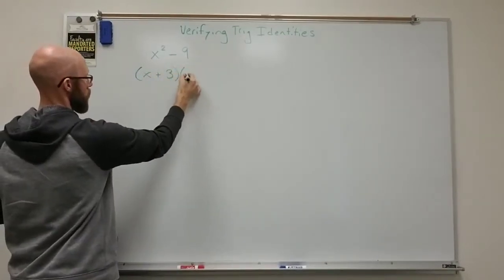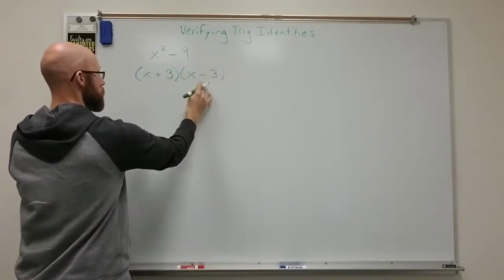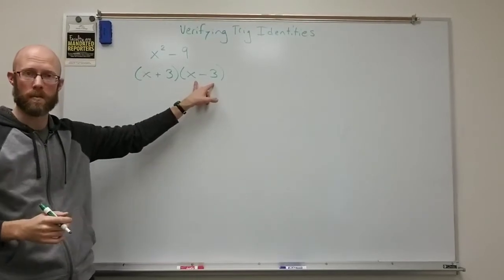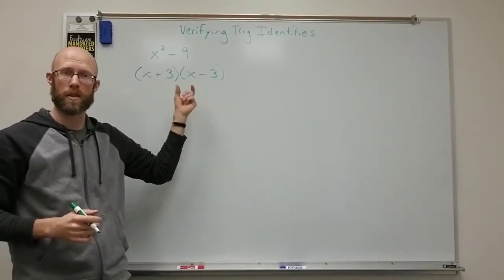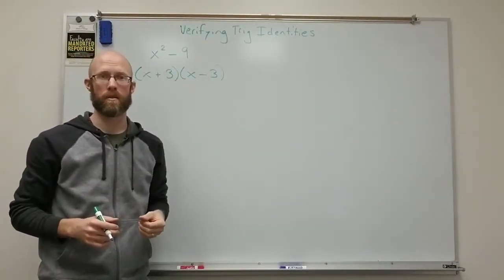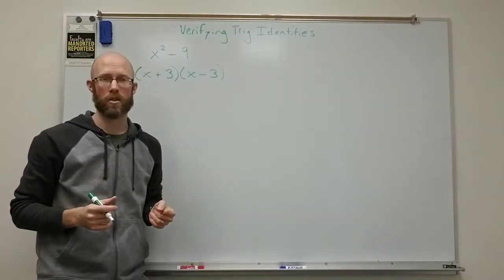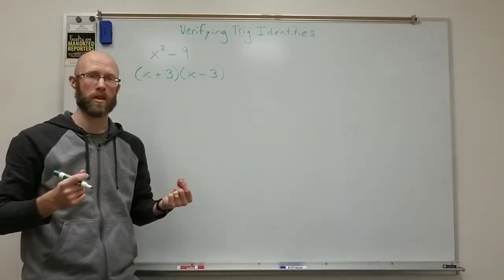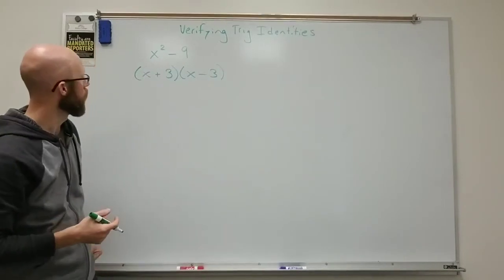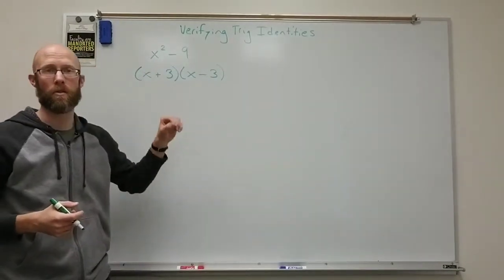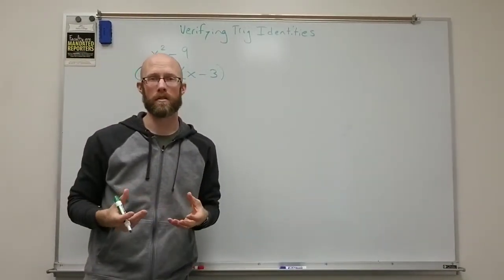They are conjugates meaning that they have the same two terms, x plus three and x minus three, the same two terms, except the sign in the middle is different. So x and three are shared in the two factors, but the one has a plus, one has a minus between them. So this is the factored form.